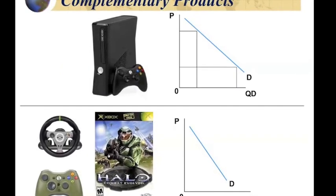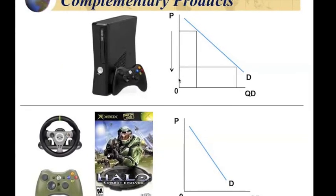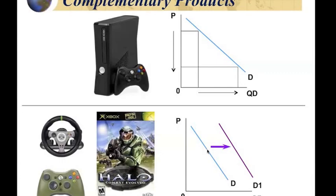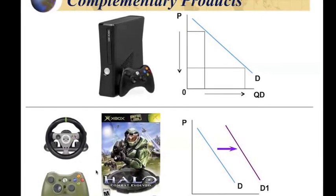Let's look at how this would look on a graph. Let's say the price of the Xbox 360 goes down, causing a movement along the existing demand curve. Because of the law of demand, more people will buy the Xbox, and as a result, more people will buy the accessories that complement the Xbox. So as a result of this decrease in price of the Xbox, the demand for many of the accessory products will actually go up and increase.